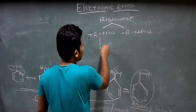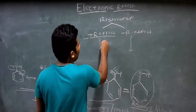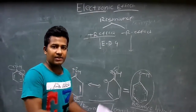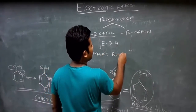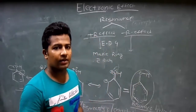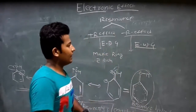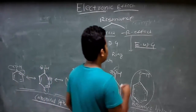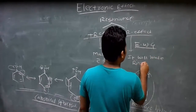In the case of the plus R effect, the substituent which is an electron-donating group will donate electrons to the ring, and that makes the ring electron-rich. In the case of the minus R effect, there is the presence of an electron-withdrawing group substituent on the ring. These groups will withdraw electrons from the ring and cause electron deficiency on the ring, making the ring electron-deficient.